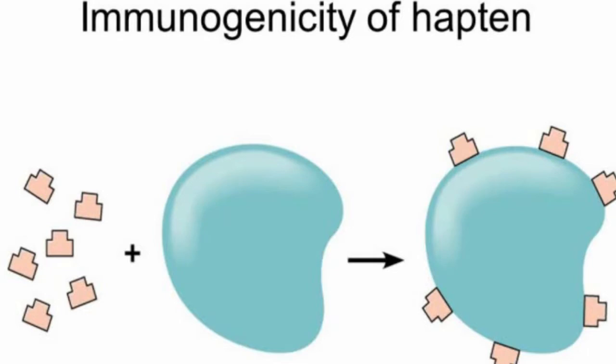Today's topic is epitopes — the smallest unit that a body can recognize as a foreign object and start taking action against. There are actually three different types of epitopes, so let's talk about what those are.